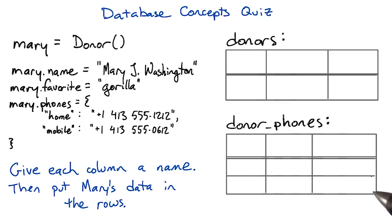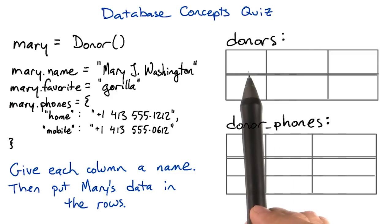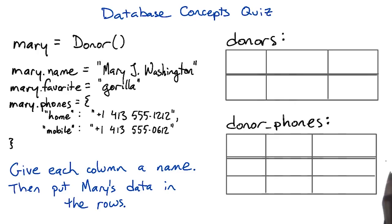Now, what's going to go in these tables? First, what columns do you think might go in these tables? And second, how would you represent Mary and her two phone numbers in these columns?